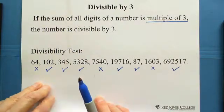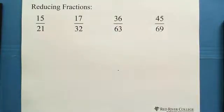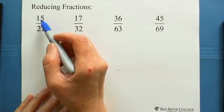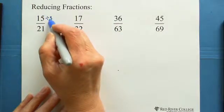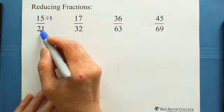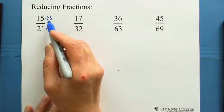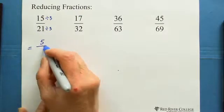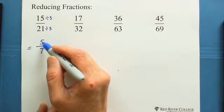Now let's try reducing fractions. For 15 over 21: 1 plus 5 is 6, which is twice of 3 — so divide by 3. 2 plus 1 is 3, so it's also divisible by 3. 15 divided by 3 equals 5, and 21 divided by 3 equals 7. So 15 over 21 reduces to 5 over 7.